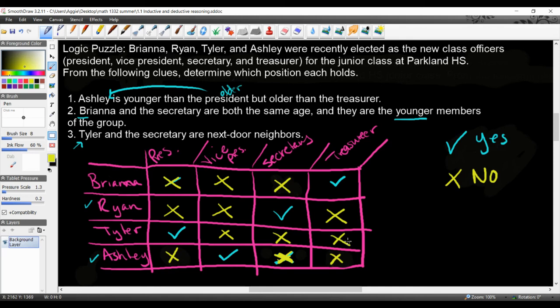And Brianna is the treasurer. And just like that, we can cross out our last one. So with this information, we now know who everyone is. Brianna is our treasurer, Ryan is the secretary, Tyler is the president, and Ashley is the vice president. And this is an example of using deductive reasoning for a logic puzzle.